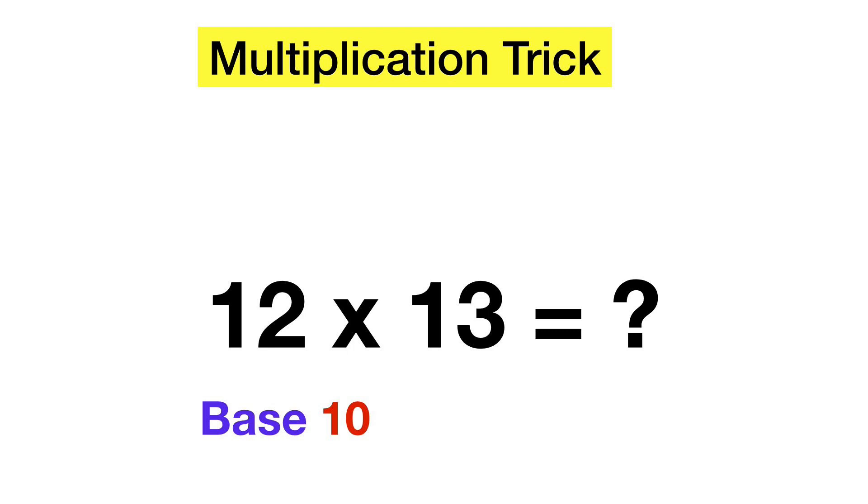Now what we're going to do is find the difference from this base for each of our numbers. In this case, for 12, the difference from 10 is 2. That means 12 is 2 above 10. And for 13, it is 3 above 10, so 3 is the difference.